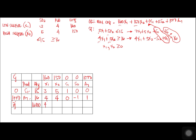Computing the Zj row: Zj for quantity = 0(15) + 1000(16) = 16,000. For X1: 0(3) + 1000(4) = 4,000. For X2: 0(5) + 1000(4) = 4,000. For S1: 0. For S2: −1,000. For A1: 1,000. The Cj − Zj row gives: 160 − 4000 = −3,840; 150 − 4000 = −3,850; 0; 0 − (−1000) = +1,000; 1000 − 1000 = 0. Since we choose the most negative, the optimum column is X2 with −3,850.